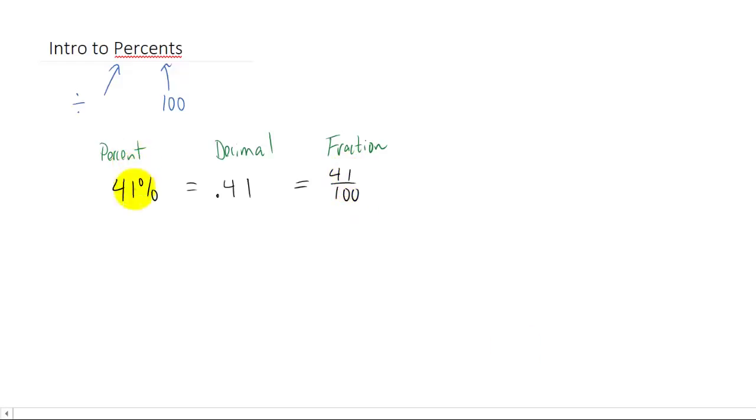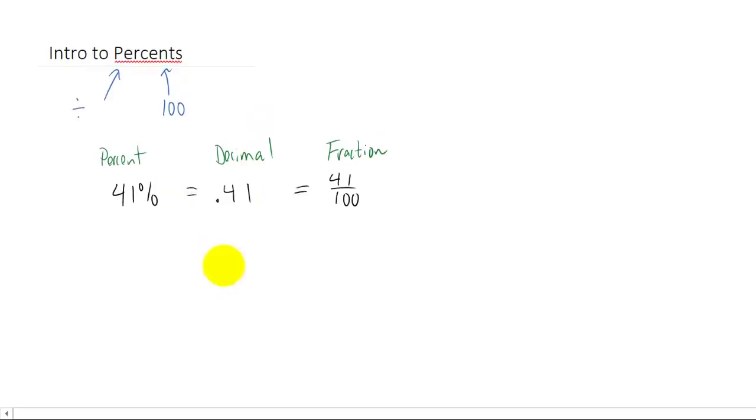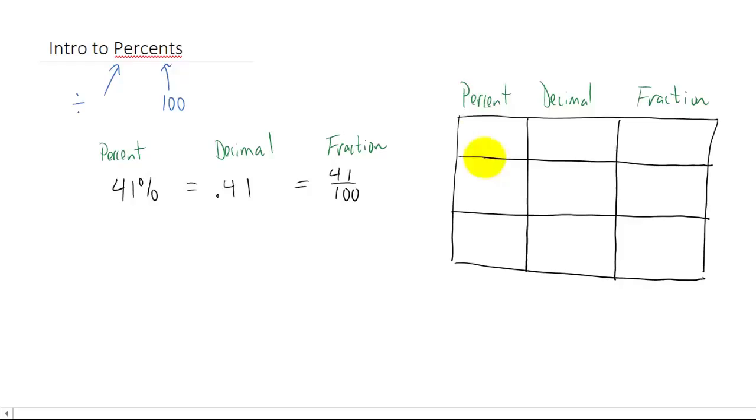So we just learned that every percent can be written as a decimal or as a fraction. Likewise, any fraction can be written as a decimal or percent, or any decimal can be written as a percent or a fraction. So we can make this sweet little chart here, and I could give you a number in the chart, say forty one percent, and ask you to write that number in the other two forms.